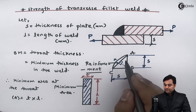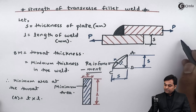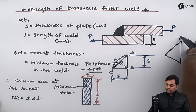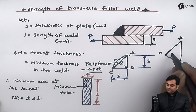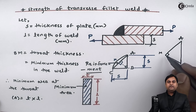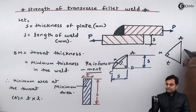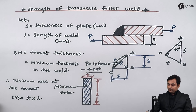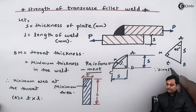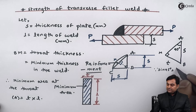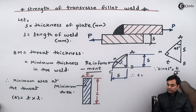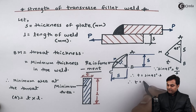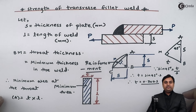To find T, consider the enlarged triangle AMB. Here BM is the throat thickness T, AB is the plate thickness S, and the angle at A is 45°. Since sin 45° equals opposite over hypotenuse, we have sin 45° = T / S. Therefore T = sin 45° × S, which gives T = 0.707 S.